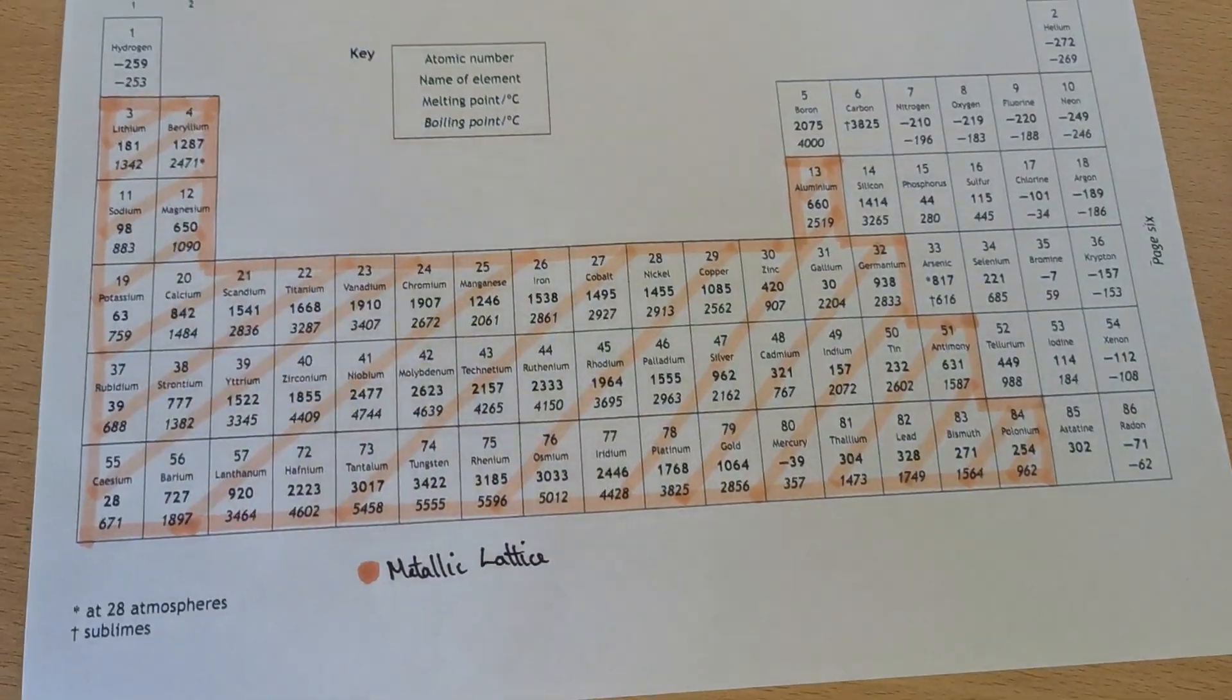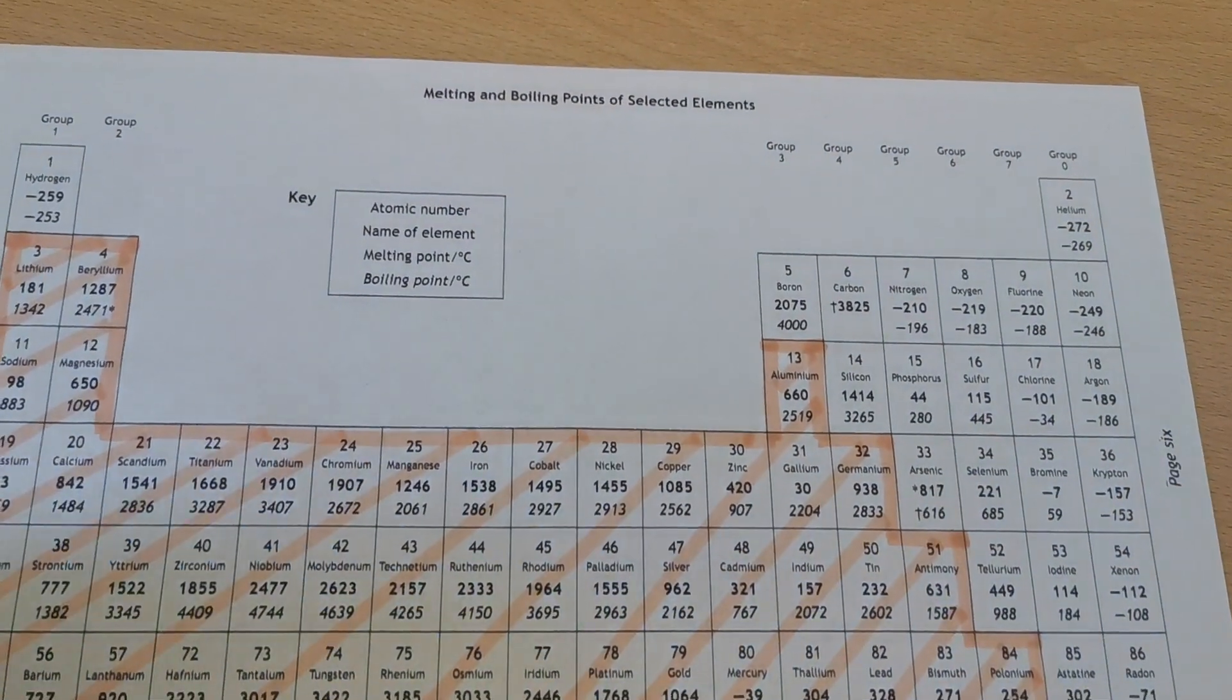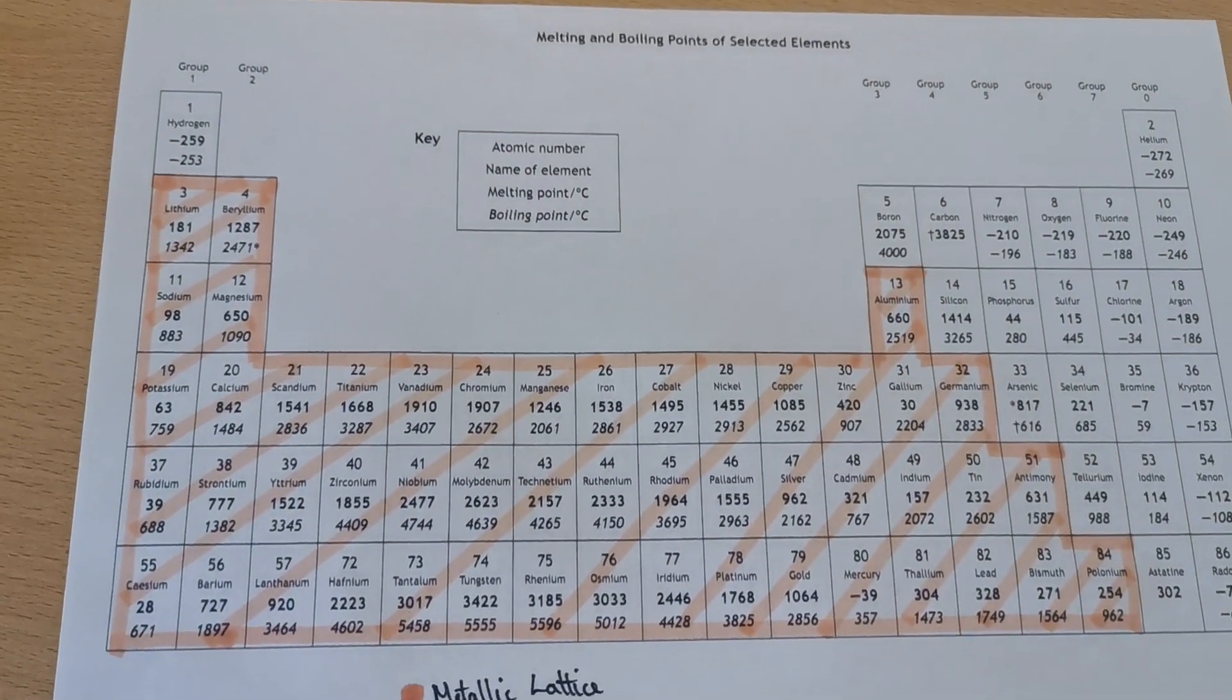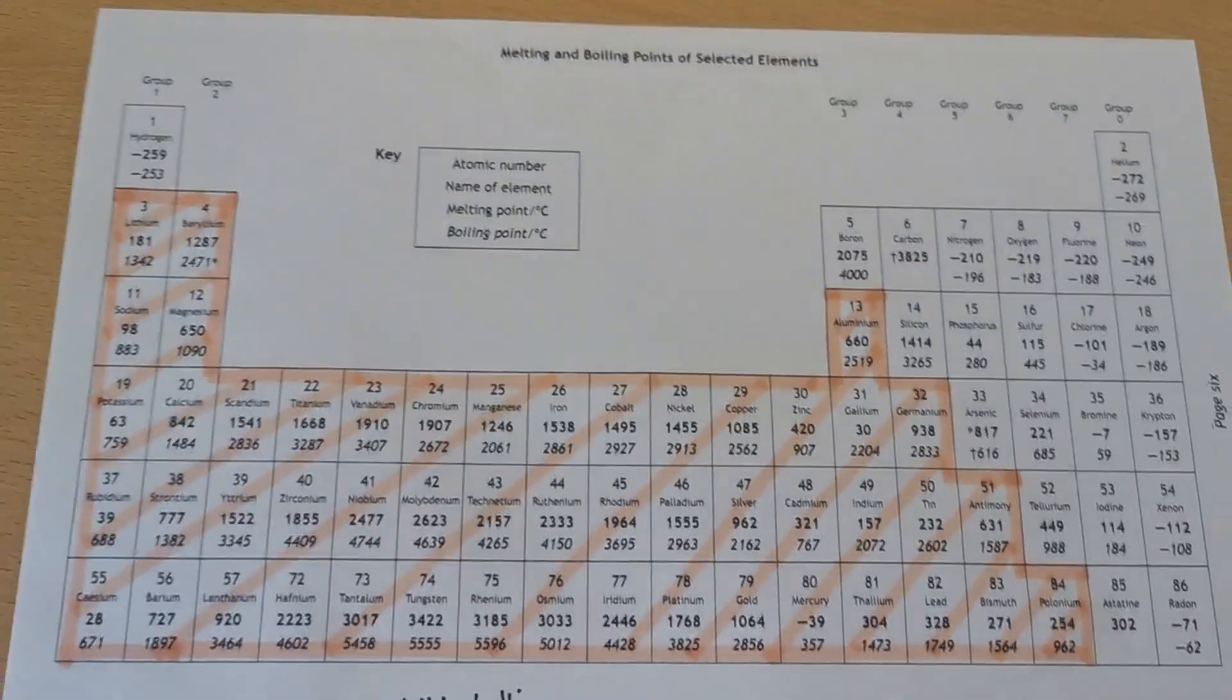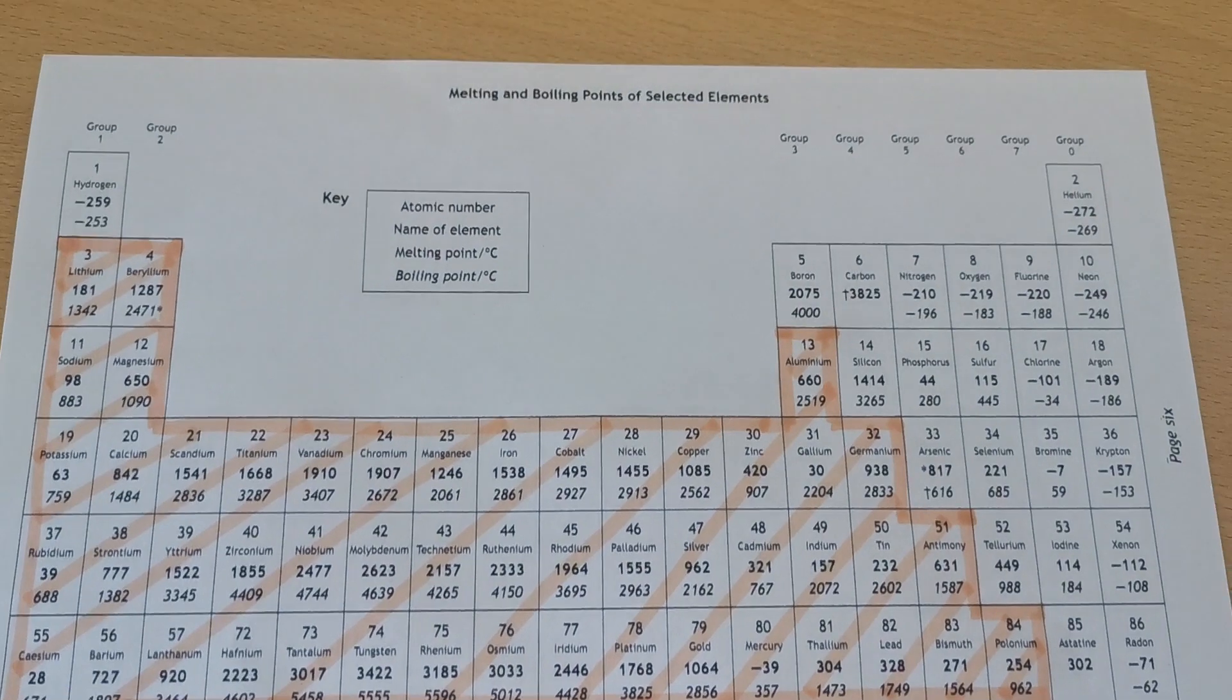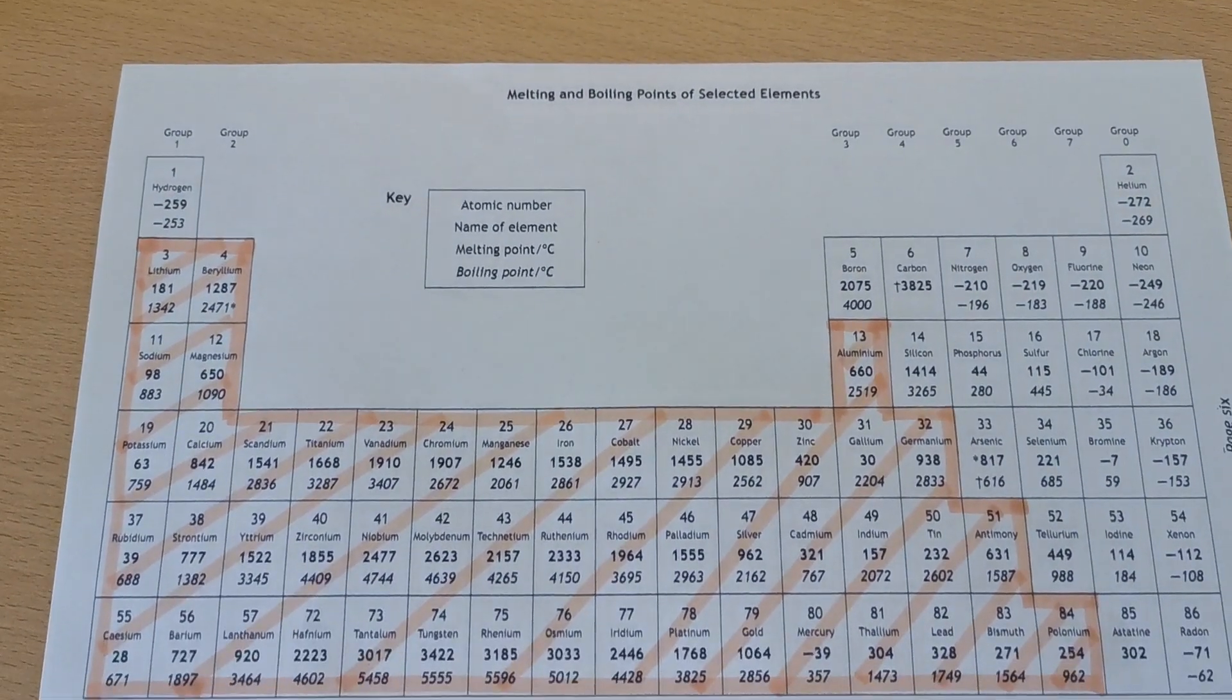The next structure we're going to look at is a covalent network. Again, you learned about covalent networks in National 5 chemistry. In National 5 you would have learned that carbon and silicon are both in covalent network forms and that is still true.